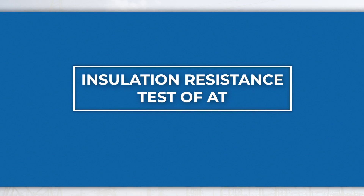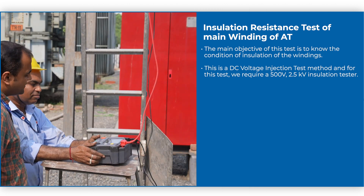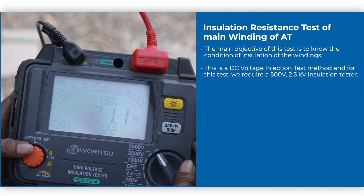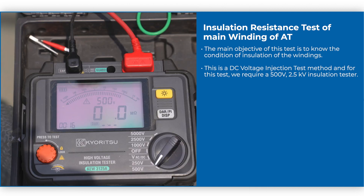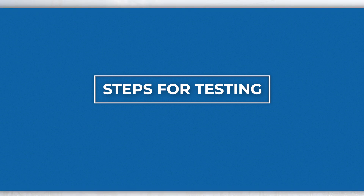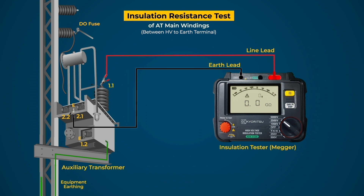Insulation resistance test of AT: The main objective of this test is to know the condition of the insulation of windings of AT. This is a DC voltage injection test method, and for this test we require a 500 volt and 2.5 kV insulation tester. For HV to earthing test, connect the line terminal of the tester to HV and the earth terminal of the tester to earthing. Then check all connections and select the DC voltage level to 2.5 kV on the tester.